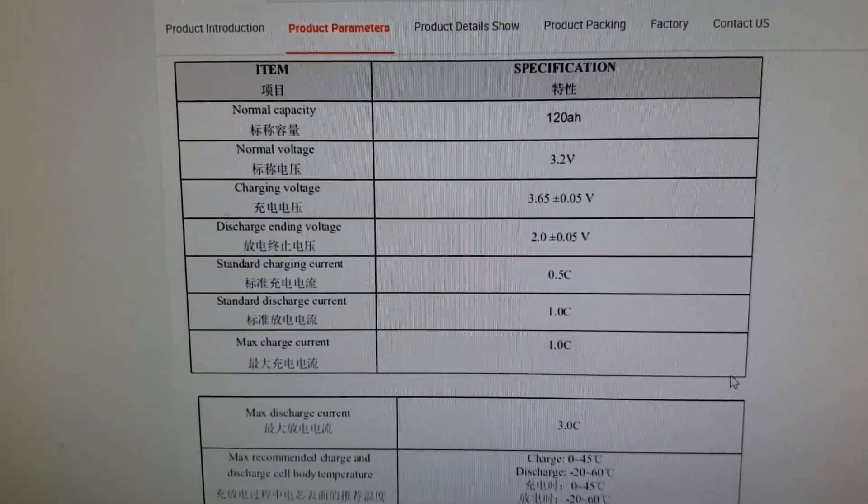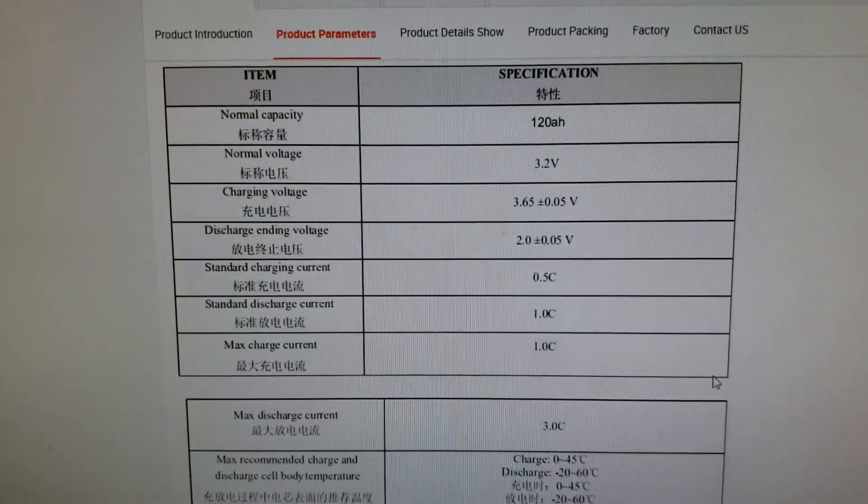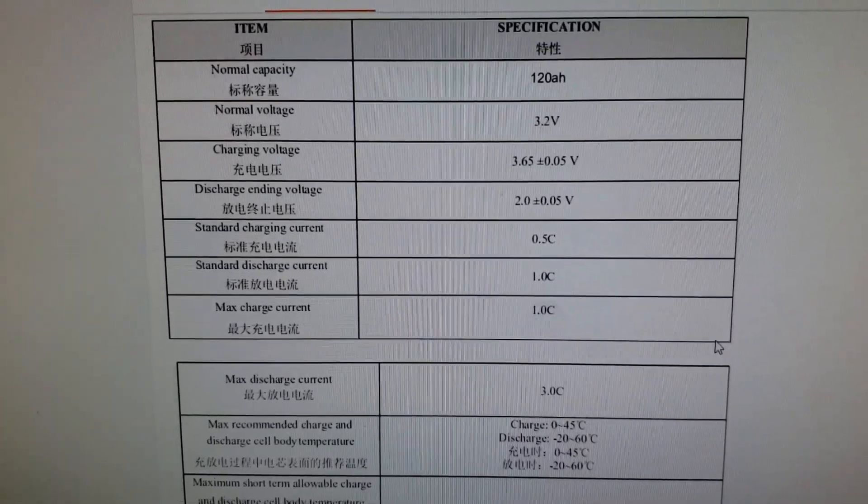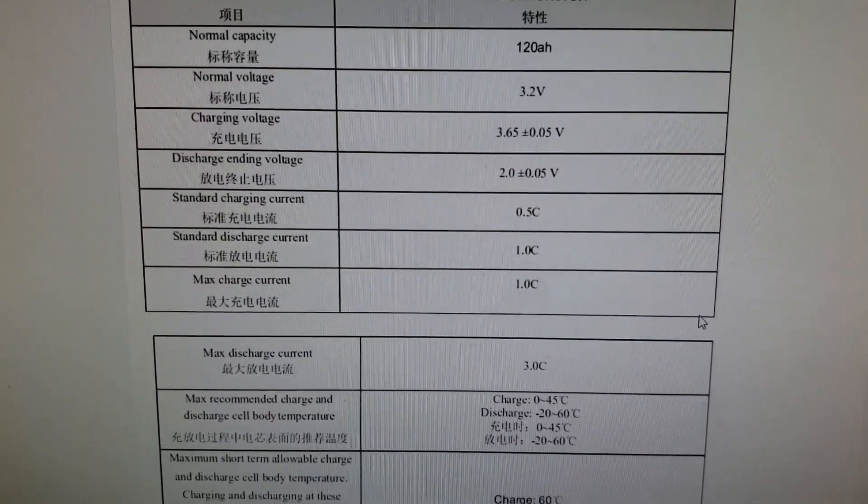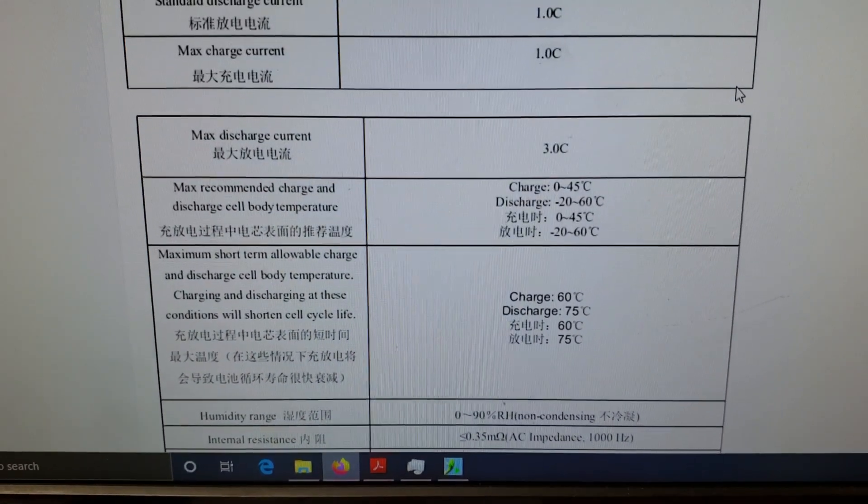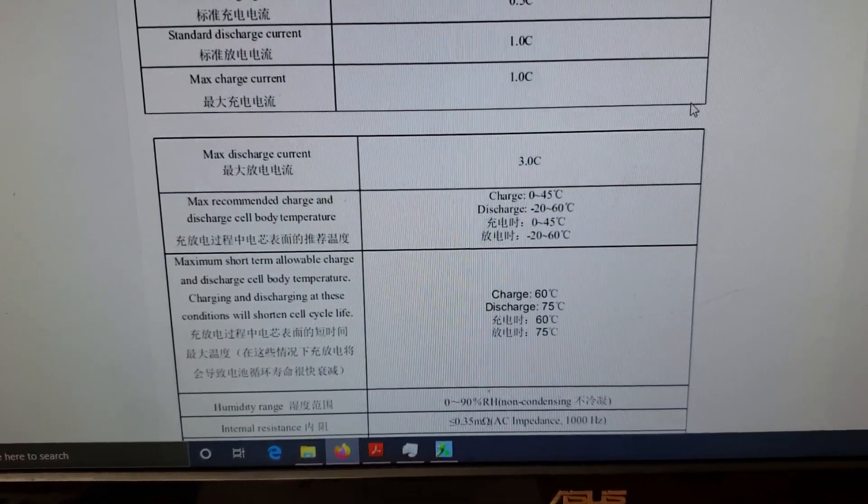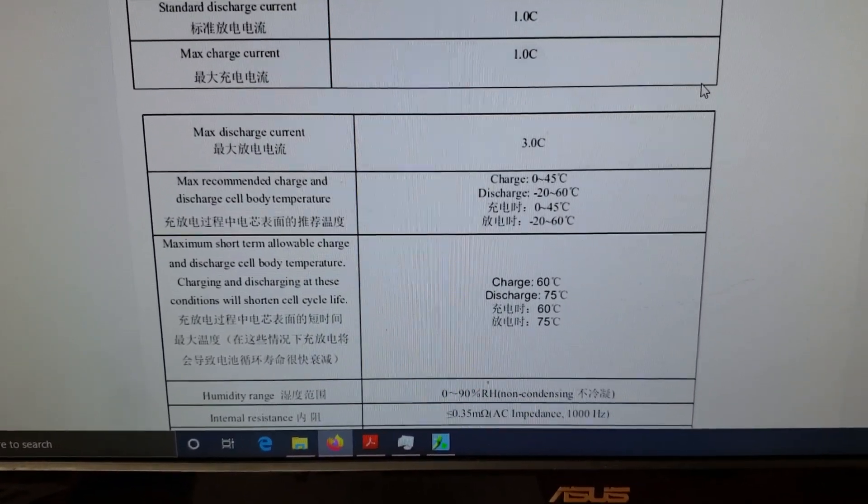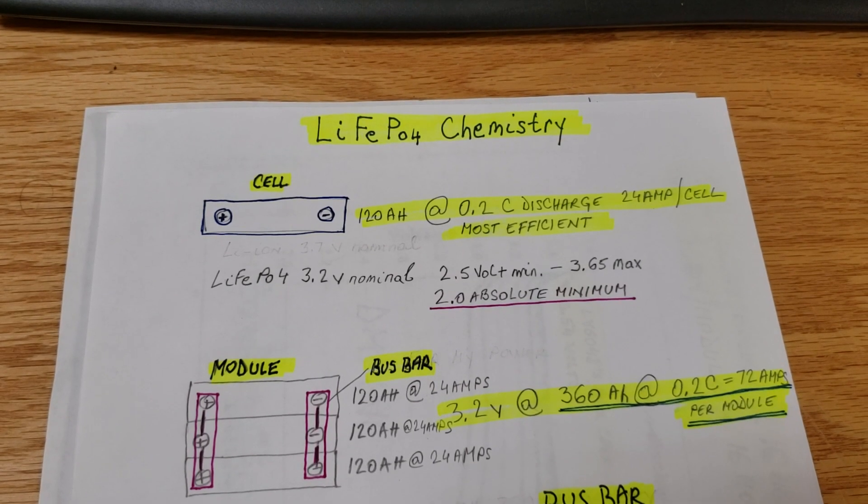Here are the specifications for this specific cell that I bought: 120 amp hours nominal voltage of 3.2 volts for a LiFePO4 battery, lithium iron phosphate battery. Max charge 3.65, max discharge voltage is 2 volts per cell. Standard charging current is 0.5C, standard discharge current is 1C, and max charge current is 1C. We can charge the battery between 0 and 45 degrees Celsius, we can discharge between minus 20 to plus 60 degrees Celsius.